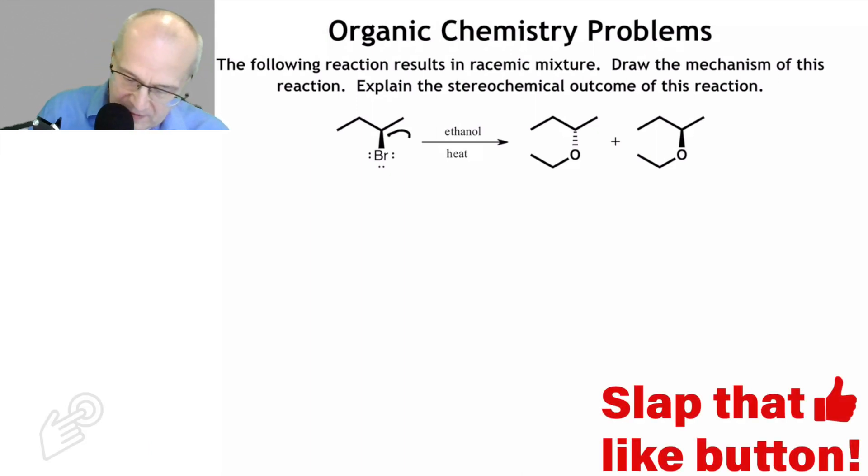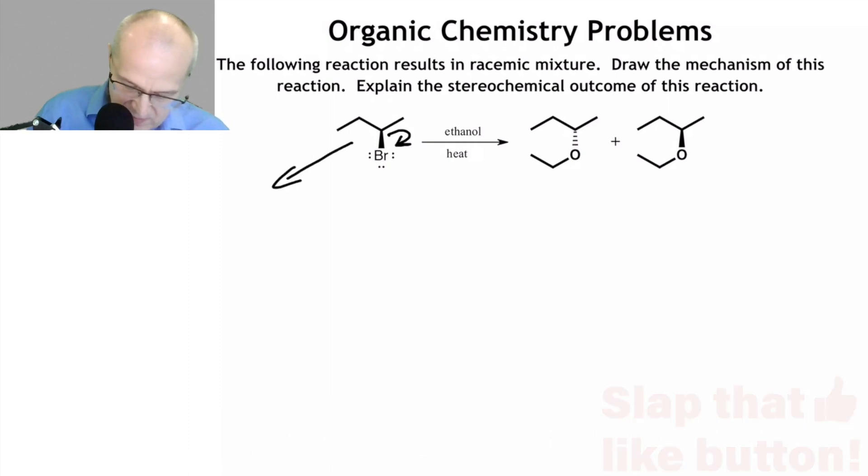Leaving group leaves. That's the first step in all of these SN1 mechanisms. The leaving group leaves. It forms a plus charge right there. And of course, the bromine is the spectator ion here. It doesn't do anything in the reaction.